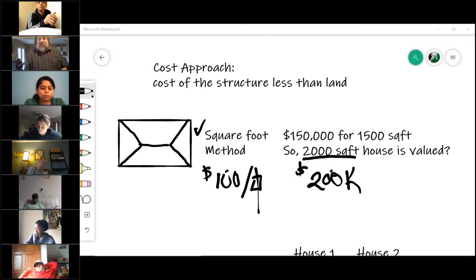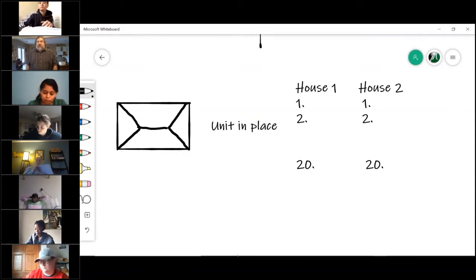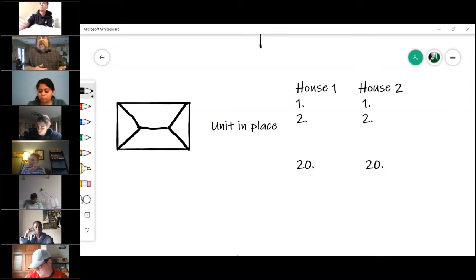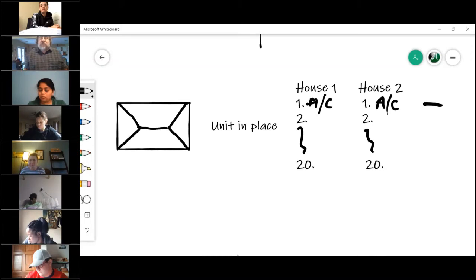Now let's say that doesn't work. We actually have a second way of doing it - it's called the unit in place method. Still the same home, but here's the difference. Now, instead of the house looking as one unit, we're going to come up with any number of units, one to twenty let's say. In this one we're going to look at the air conditioning unit. Well, this air conditioning unit is the same one, so there's no price change.